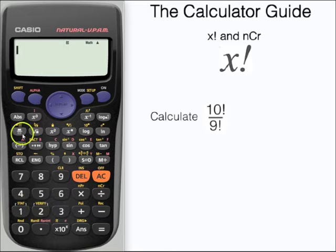Let's use the factorial button now to calculate this: 10 factorial divided by 9 factorial. Use the shift and the X minus 1 or the reciprocal button, and press equals to get our answer.